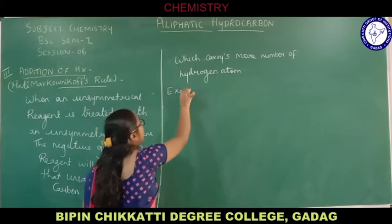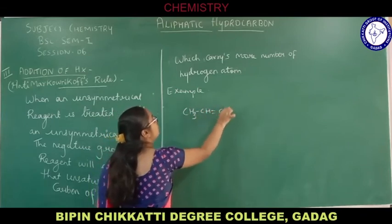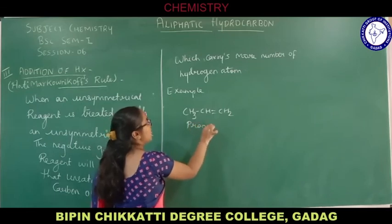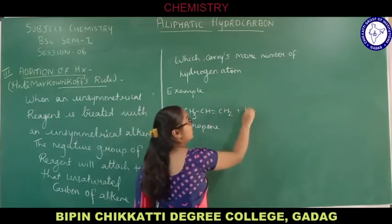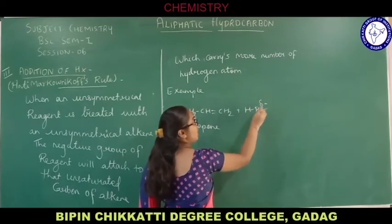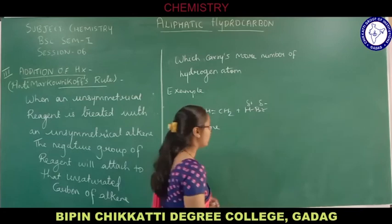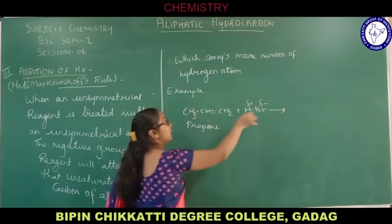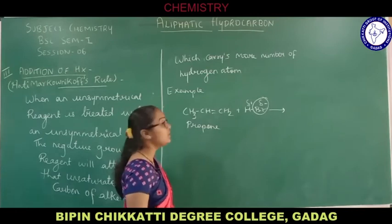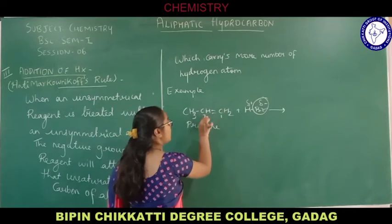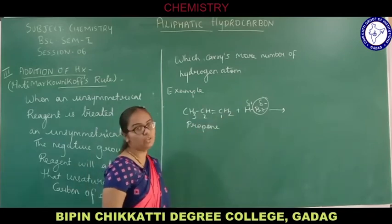Example: we will take propene — the simpler one. When this propene, which is an unsymmetrical alkene, is treated with the unsymmetrical reagent HBr — which has partial negative charge on Br and partial positive charge on H due to the difference in electronegativity — the negative group of the reagent will go and get attached to that carbon atom which is having more number of hydrogen atoms.